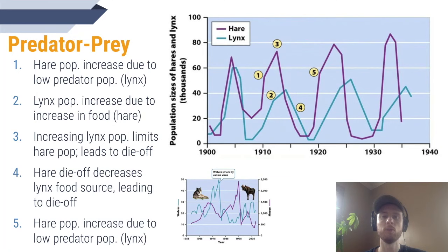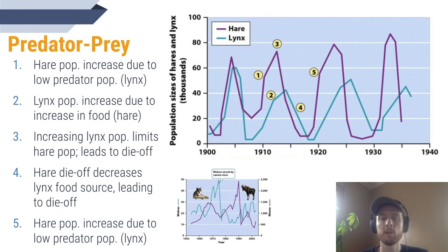We can also see a carrying capacity that is limited less by food or water availability and more by predation. The hare is the main prey of the lynx, and we can see that their population sizes can influence each other in a very predictable, repetitive pattern. It doesn't really matter where we start in the cycle, but starting at step one on the graph: the hare population starts to increase dramatically with such a small lynx population — without their predator to keep them in check, they grow very rapidly.